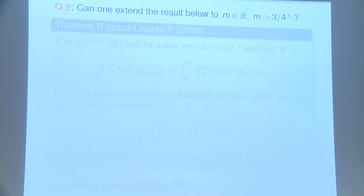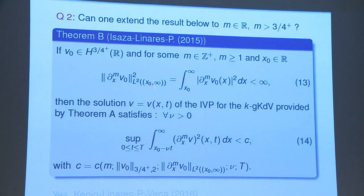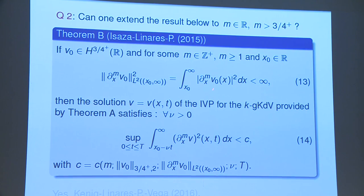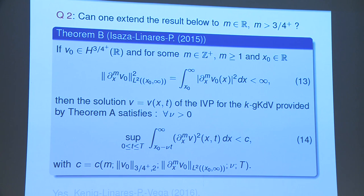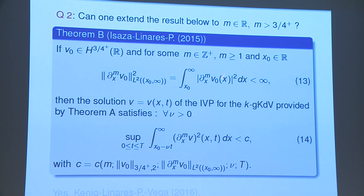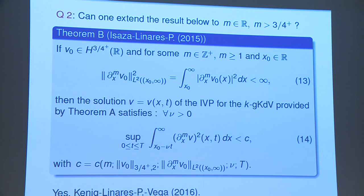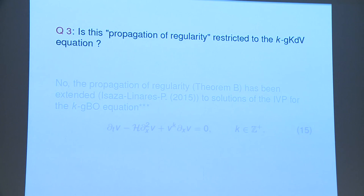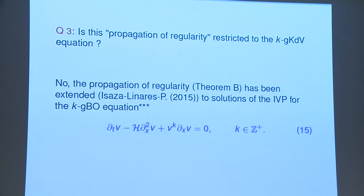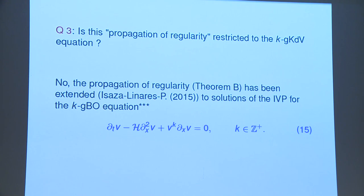This is a corollary. Then the question is: can you remove the assumption of integer derivatives? If the condition involves fractional Sobolev spaces, do you have the same result? The answer is yes, and this appears in a note with Felipe, Carlos, and Luis in one or two weeks. Is this related to KdV only? No — you can prove it for the Benjamin-Ono equation as well, though the proof is more complicated; you have to iterate twice because you advance in halves.